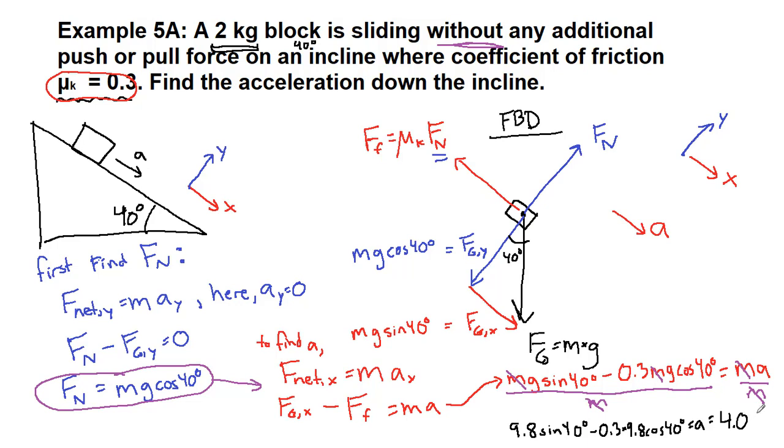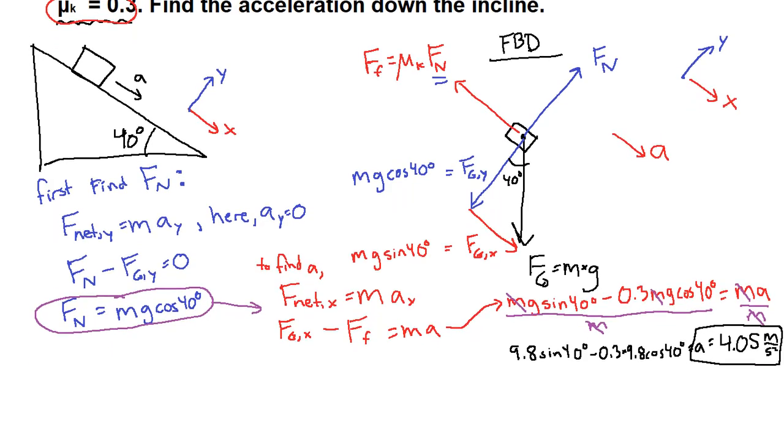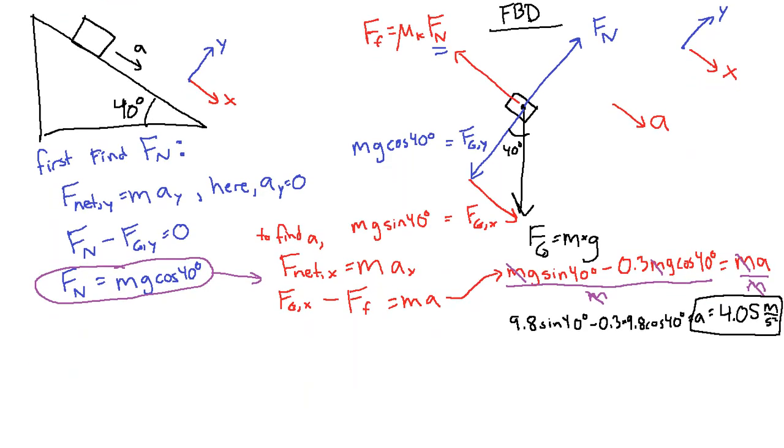We get 4.05 meters per second squared. I know, way off here in the corner. Sorry about that. 4.05 meters per second squared. So I'm going to scroll this down so that we can see it a little bit higher.